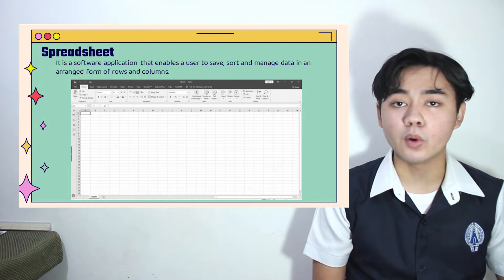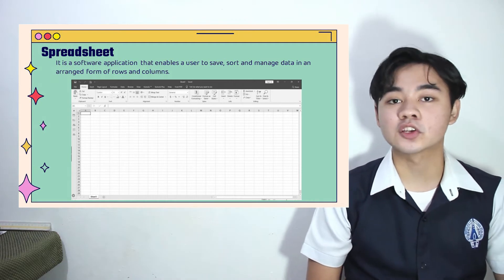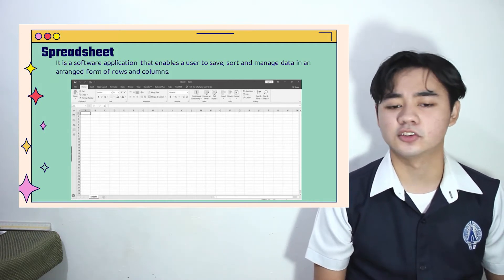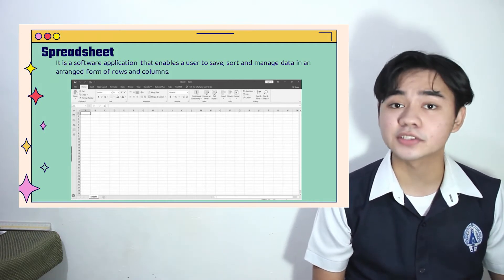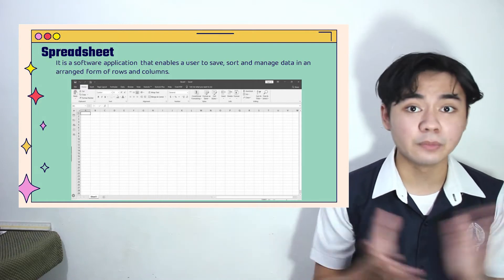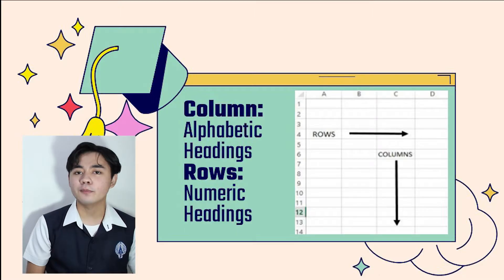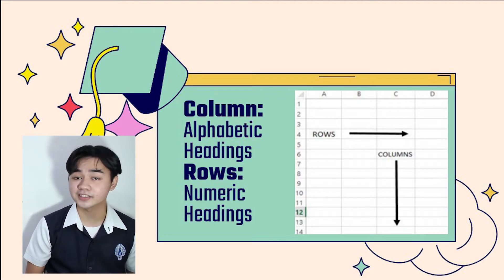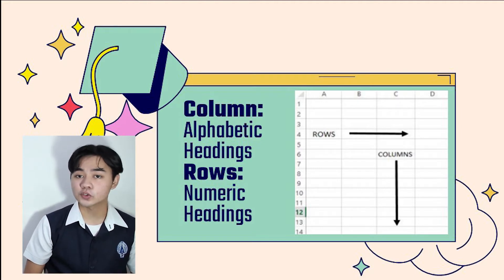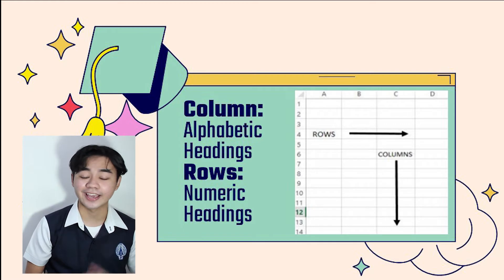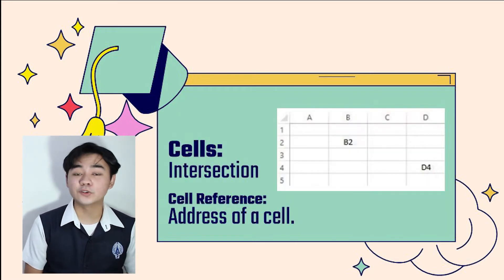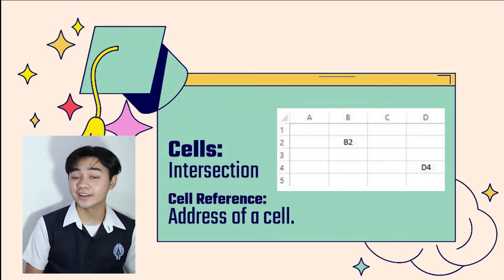Microsoft Excel is one of the most commonly used spreadsheet tools. It can be used for businesses, students' grades, analysis, and many more. Microsoft Excel is made up of columns, identified with alphabetic headings, and rows, identified with numeric headings. When columns and rows intersect, the resulting box is called a cell.